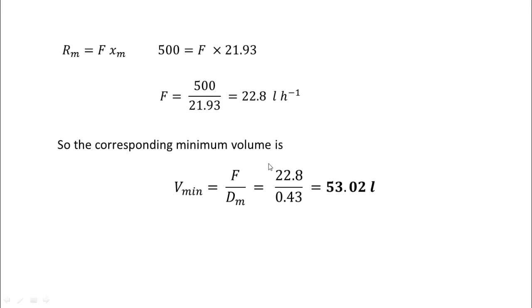The corresponding minimum volume is Vm = F / Dm, from the definition of the dilution rate. To minimize V we maximized D; we found Dm = 0.43, and we found F = 22.8 L/hr from the productivity. Therefore, Vm = 22.8 / 0.43 = 53.02 liters. This is the minimum volume of the chemostat for the given set of conditions.